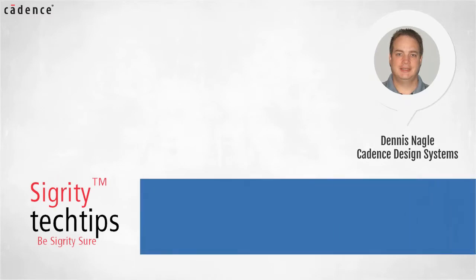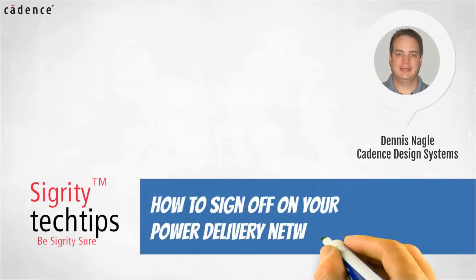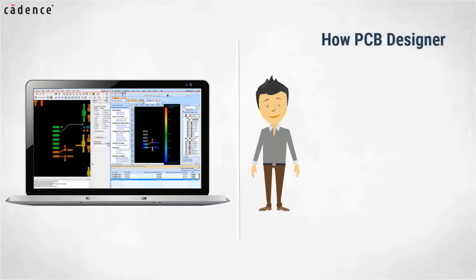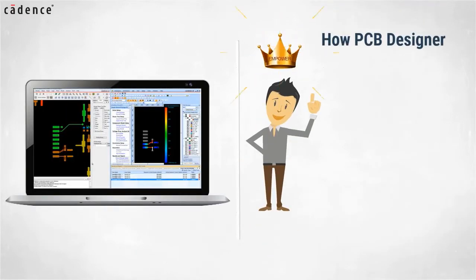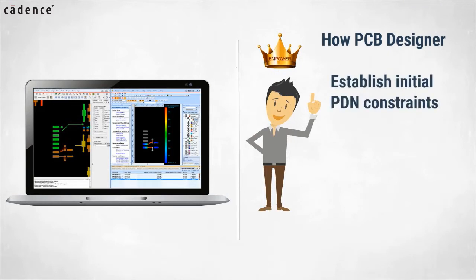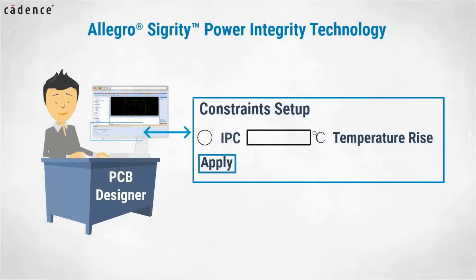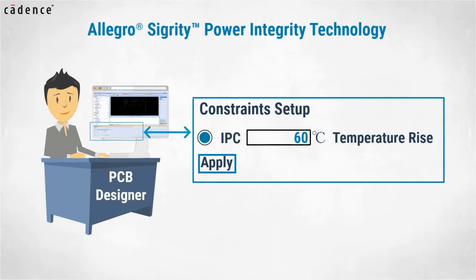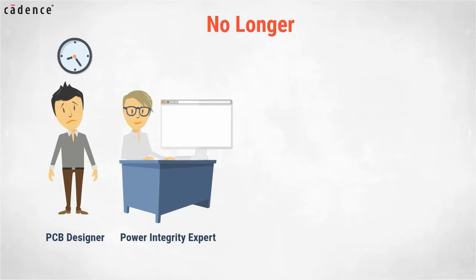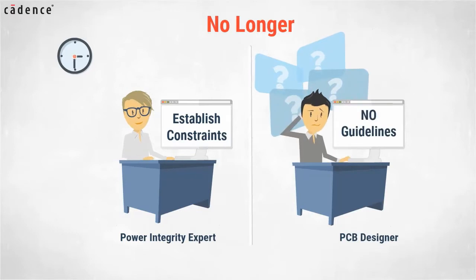Today we bring you another installment of how to sign off on your power delivery network design. Our video today will show you how PCB designers are now empowered to establish initial power delivery network constraints without having to become a power integrity expert. Utilizing Allegro Sigridy power integrity technology, PCB designers can now use automated IPC calculations to establish targets for their power delivery network design. No longer will PCB designers have to wait for power integrity experts to establish constraints for them, or be faced with starting their designs with no guidelines.